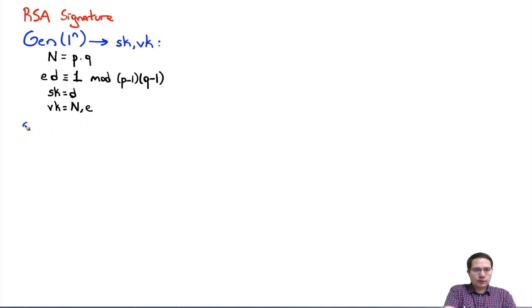Then we had an algorithm for signing messages using the signing key. It took as input the signing key and the message and produces some signature sigma. It generated sigma simply by computing the random oracle output on M and then raising that to the power D, of course modulo N.